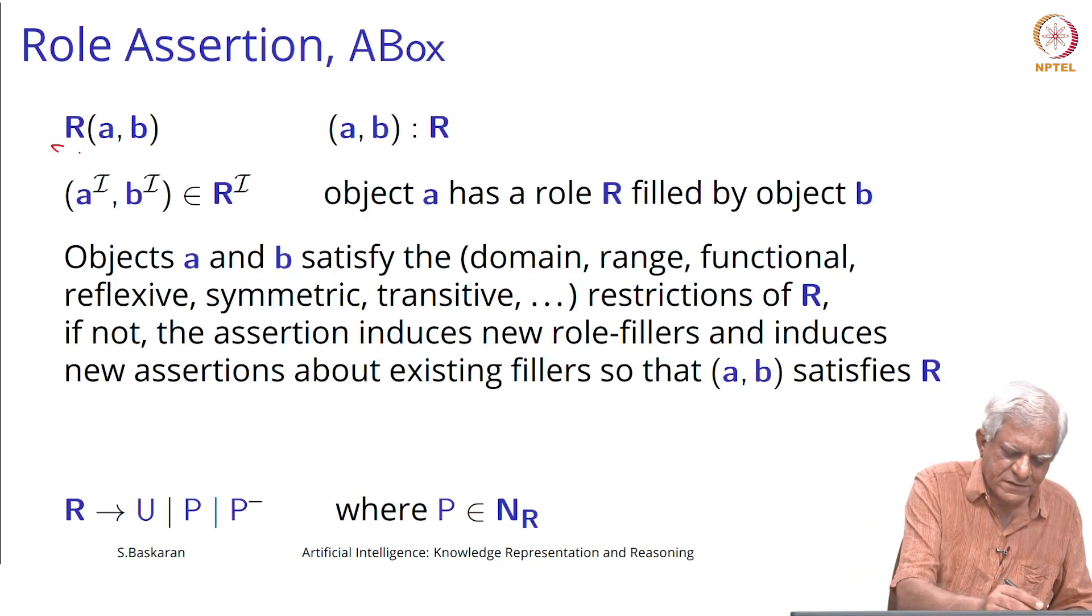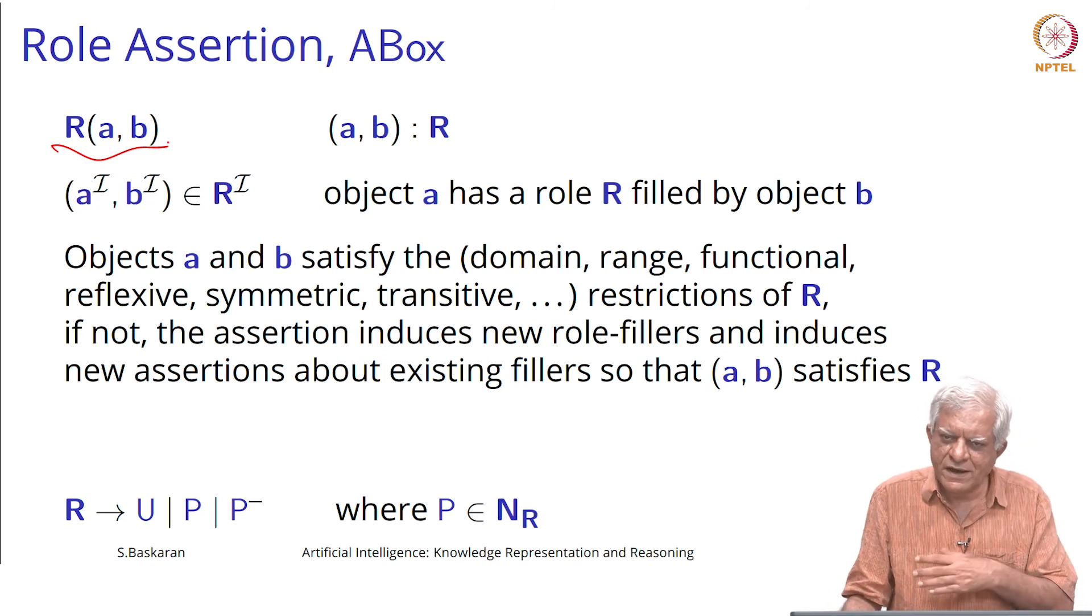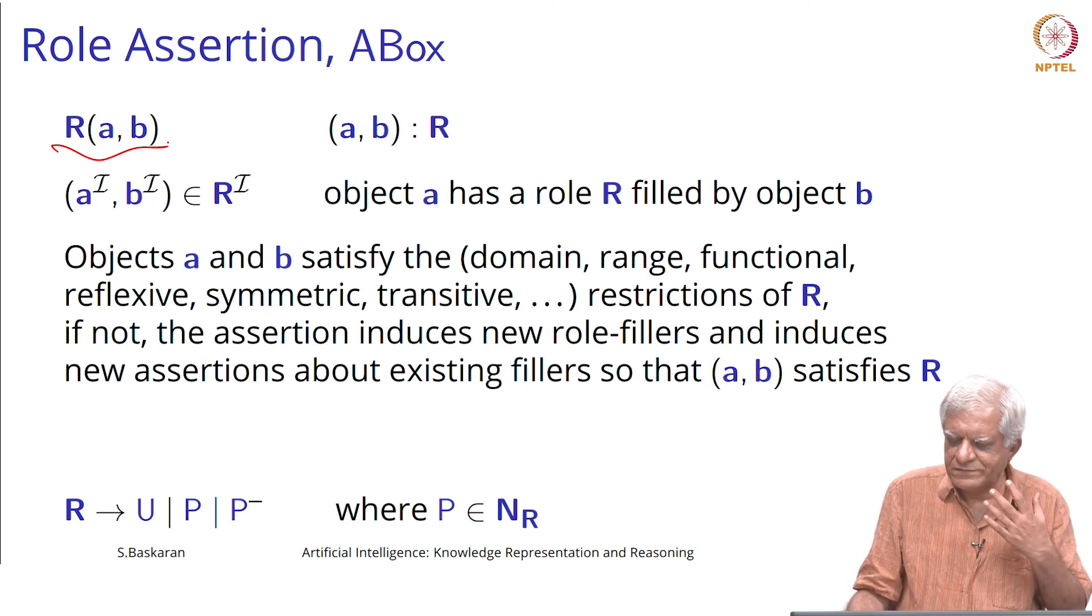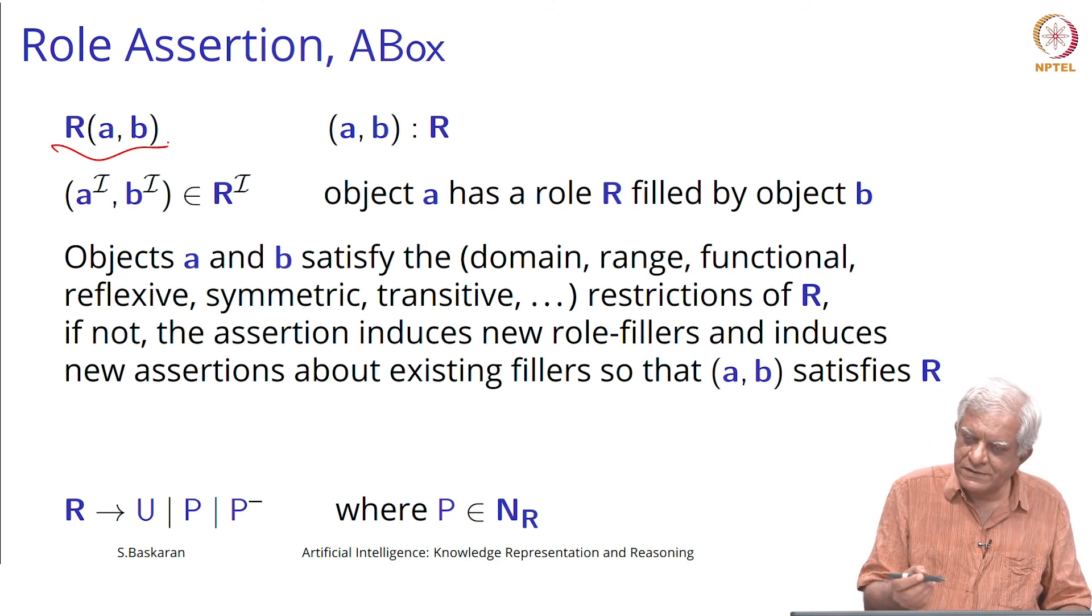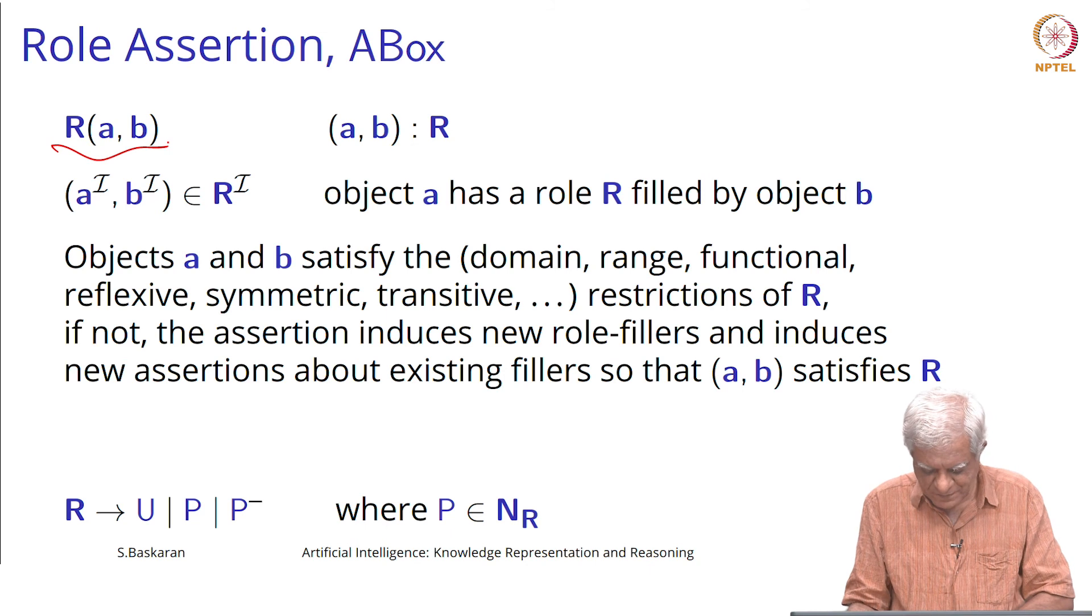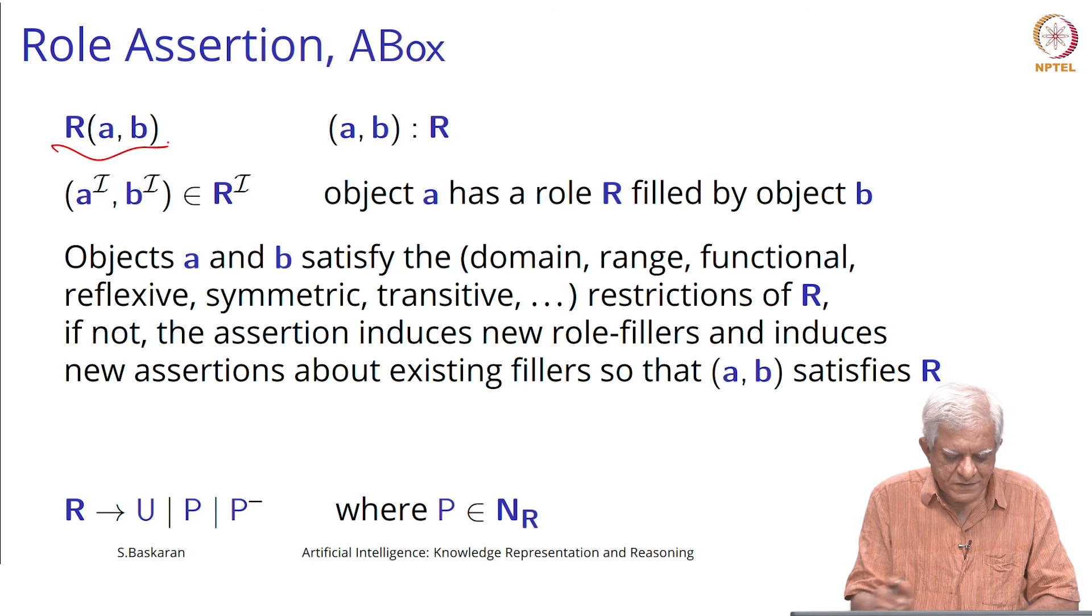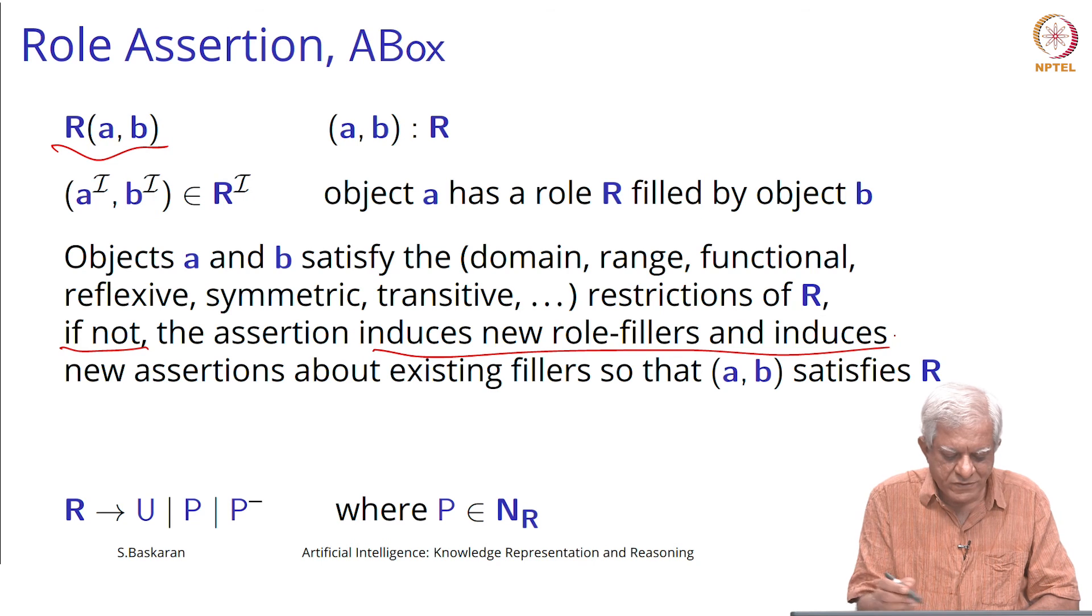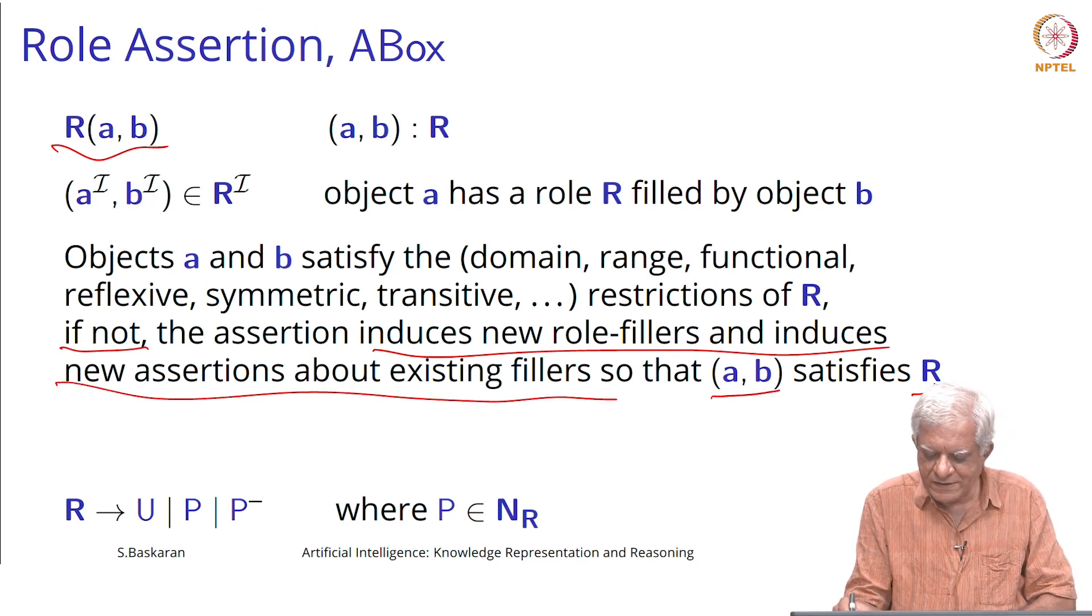Likewise, you can assert that there is a relation between a and b that a is an aunt of b for example. If it is not already clear from the knowledge base, then we would add those appropriate relations and restrictions. If not, the assertion induces the role fillers and induces the new assertions about the existing role fillers. That this (a,b) satisfies this relation.